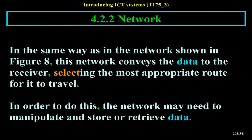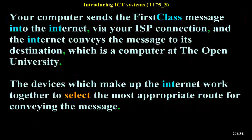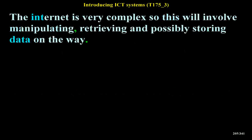The network conveys the data to the receiver, selecting the most appropriate route for it to travel. In order to do this, the network may need to manipulate and store or retrieve data. Your computer sends the First Class message into the Internet via your ISP connection, and the Internet conveys the message to a computer at the Open University. The devices which make up the Internet work together to select the most appropriate route, and this will involve manipulating, retrieving and possibly storing data on the way.